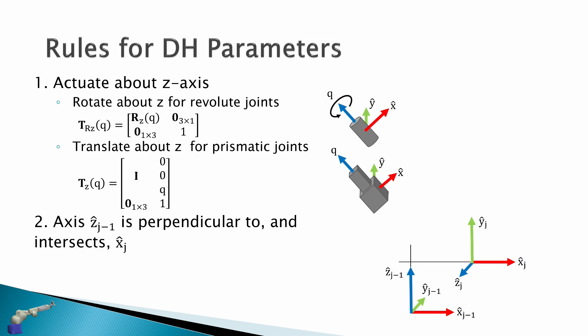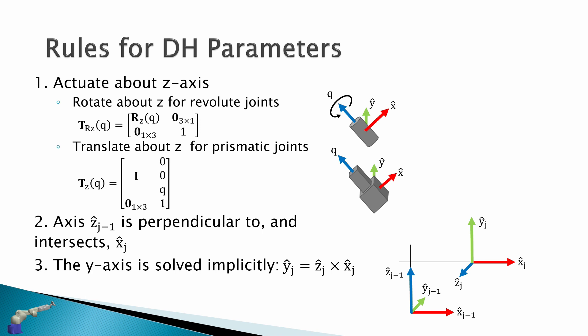The second rule is that the z-axis for frame j-1 is perpendicular to and intersects the x-axis of frame j. As you can see in the diagram, these two axes projected will intersect and they're at 90 degrees to each other. Lastly, we don't need to define the y-axis — this is solved implicitly, as the y-axis is just the cross product of z and x.